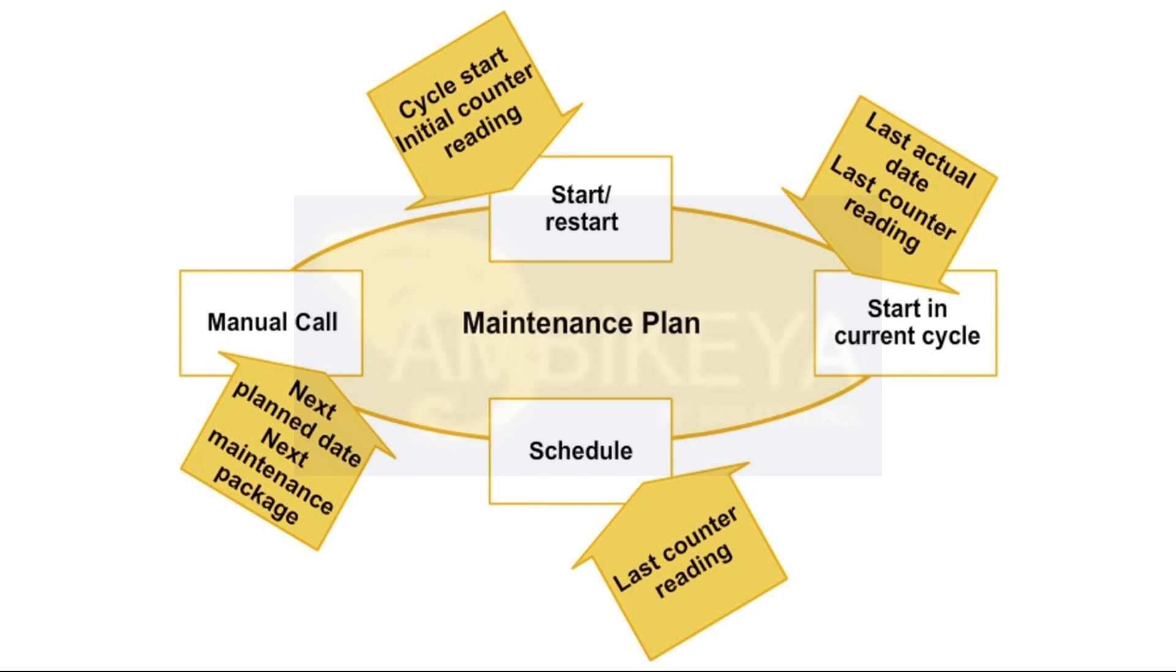Hint: when you start the performance-based maintenance plan, a smaller counter reading than that of the last measurement document can be entered. The reason for this is that by entering a smaller counter reading, a type of start in the cycle is achieved. That is, the first date can come earlier for the same cycle.